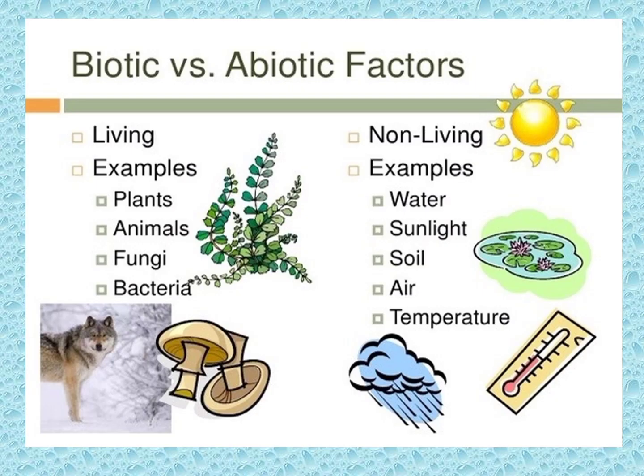Inside an ecosystem, we have what we call biotic and abiotic factors. When we say biotic, they are actually living things — things that have life, like plants, animals, fungi, and bacteria. While non-living things are called abiotic factors — things like water, sunlight, soil, air, and temperature. Heat and cold are also called abiotic factors.